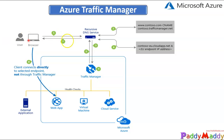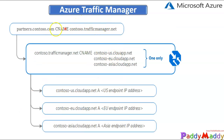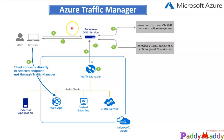Let's walk through this step by step. The first step: an end user tries to browse contestor.trafficmanager.net, which involves the DNS service. Once they try to open it, the DNS resolves the request because partners.contestor.com has a CNAME of contestor.trafficmanager.net. In the backend, DNS name resolution happens and returns the proper name — the first step is querying, and the second step is getting the records with the help of DNS.